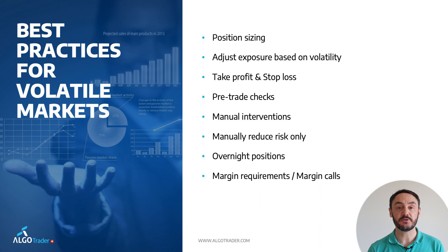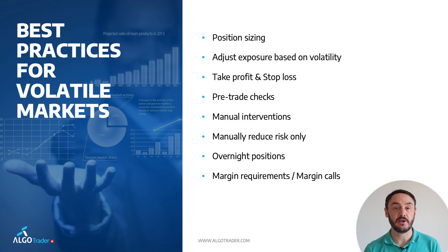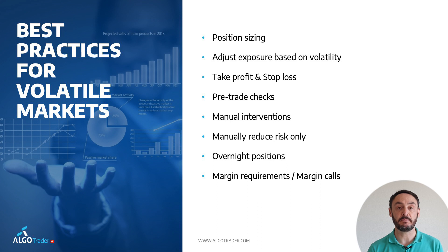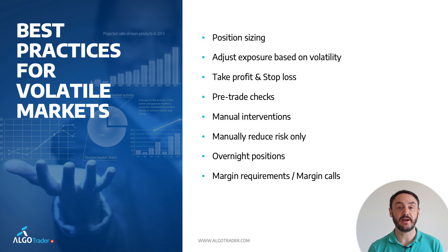Also, good risk management measures are to gradually take profit and use stop losses. On the stop-loss topic, do not use stop-limit orders to get out of your positions. A stop-limit order will trigger once the stop price is reached, at which point a limit order is placed onto the market. In volatile markets, however, the market might fall straight through your limit. Also, implement an automated pre-trade check to verify your orders are sane, even in unusual conditions.